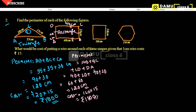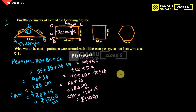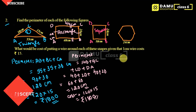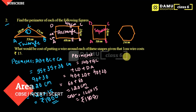Next is the square ABCD. In a square, all sides are equal. The perimeter is the sum of all sides.